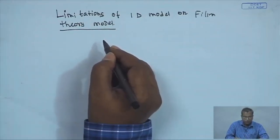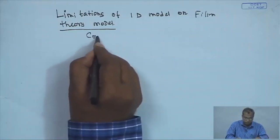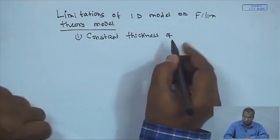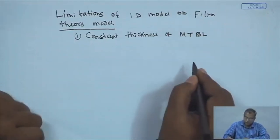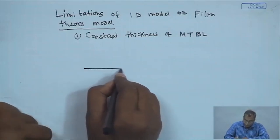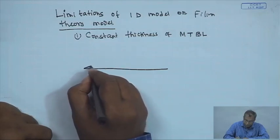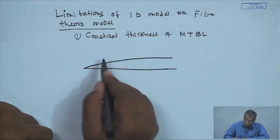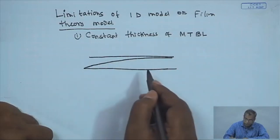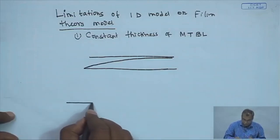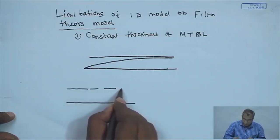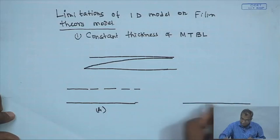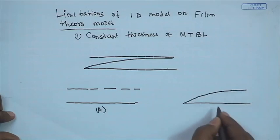The first major limitation of the one-dimensional model is the assumption of constant thickness of the mass transfer boundary layer. As described earlier, if there is a membrane surface, a mass transfer boundary layer develops over it. In the film theory, we assume a constant thickness of the solute film over the membrane surface. We should consider two cases separately: case A — constant thickness of film over the membrane surface, and case B — a developing mass transfer boundary layer.